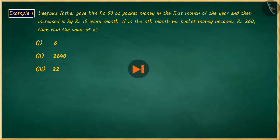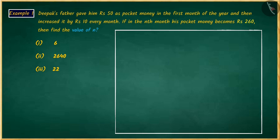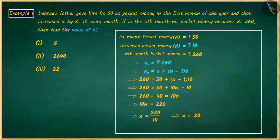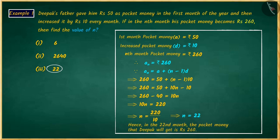Pause the video to solve the question and then match your answer. Here, we have to find the nth month. Every month the pocket money increases by Rs. 10, forming an AP. Using the formula for the nth term or general term, the value of n comes out to be 22. So in the 22nd month, Deepak's pocket money will be Rs. 260, making option 3 the correct answer.